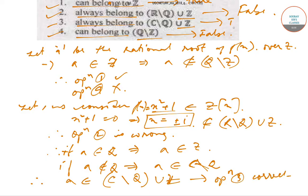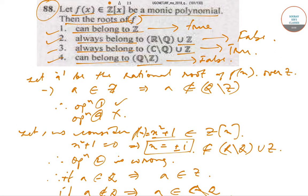So option 3 is correct. The correct options in this question are option 1 and option 3. Today we solved question 88 from the CSIR UGC NET question paper of June 2018. We will solve the next questions in subsequent videos. Thank you very much.